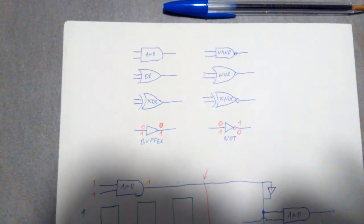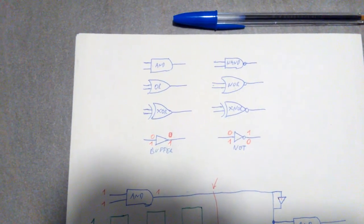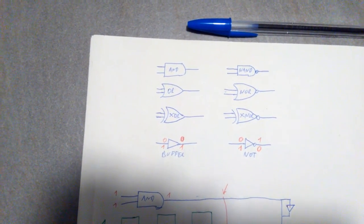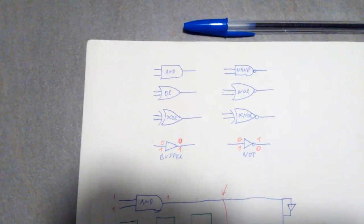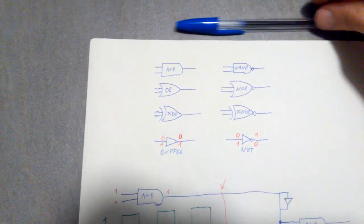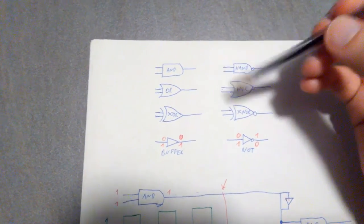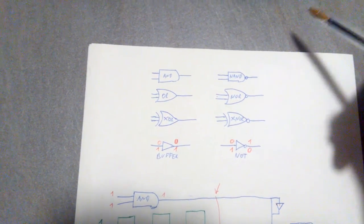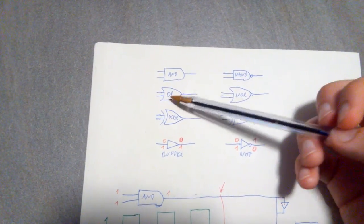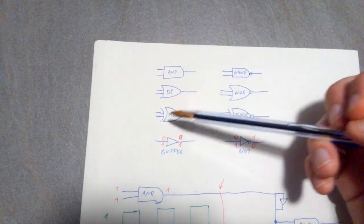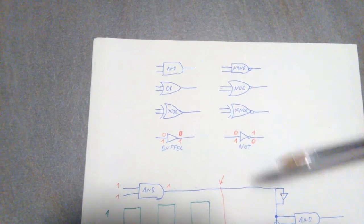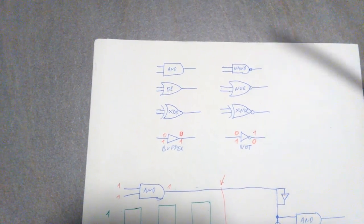Welcome back. Today I want to talk about transistors. One other thing I want to say is that we'll be talking about those gates — we have been using them. So we'll be talking about the AND gate, NAND gate, OR gate, NOR gate, XOR gate, XNOR gate, buffer, and NOT gate.